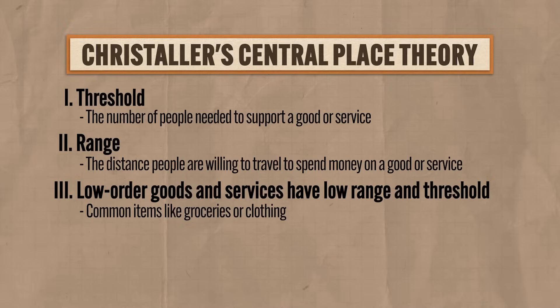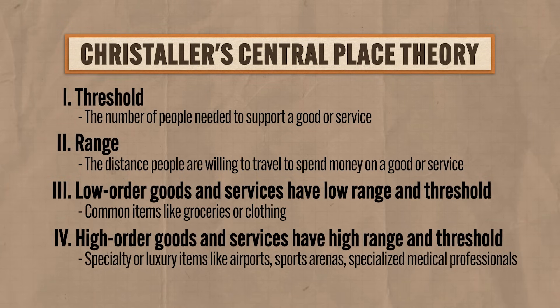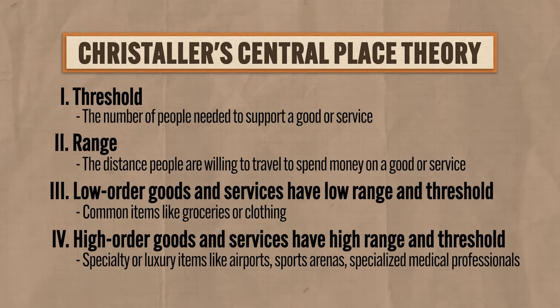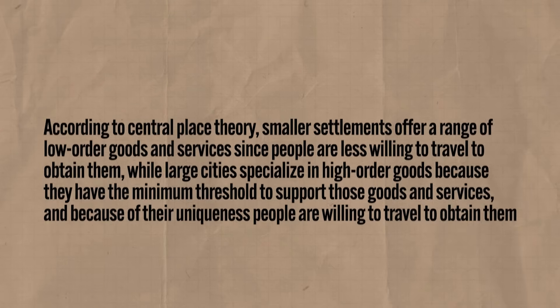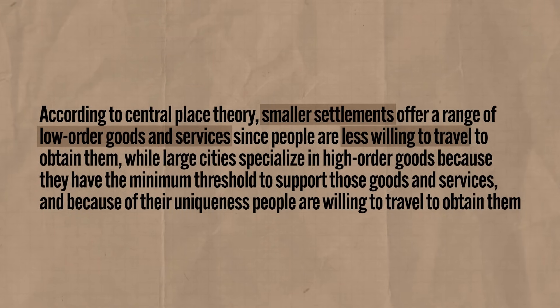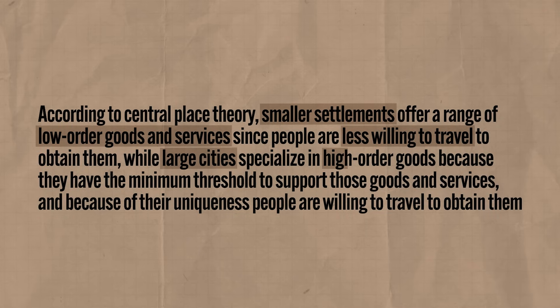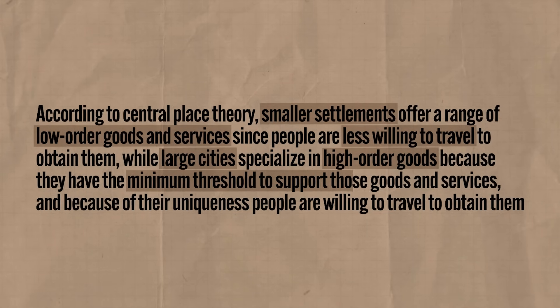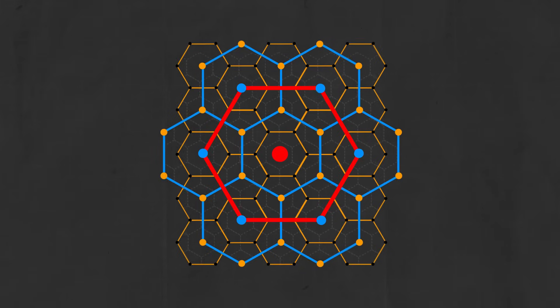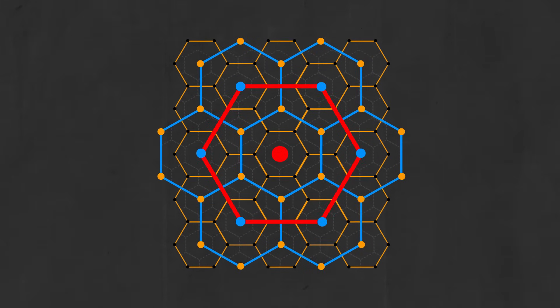High-order goods and services — specialty or luxury items like airports, sports arenas, or highly specialized neurosurgeons — have a high range and threshold. People are willing to travel further to obtain these because they're so specialized. So pulling it all together: smaller settlements offer low-order goods and services since people are less willing to travel for them, while large cities specialize in high-order goods because they have the minimum threshold to support those services and, because of their uniqueness, people will travel to obtain them. That's why the hierarchy of settlements has this spatial arrangement.